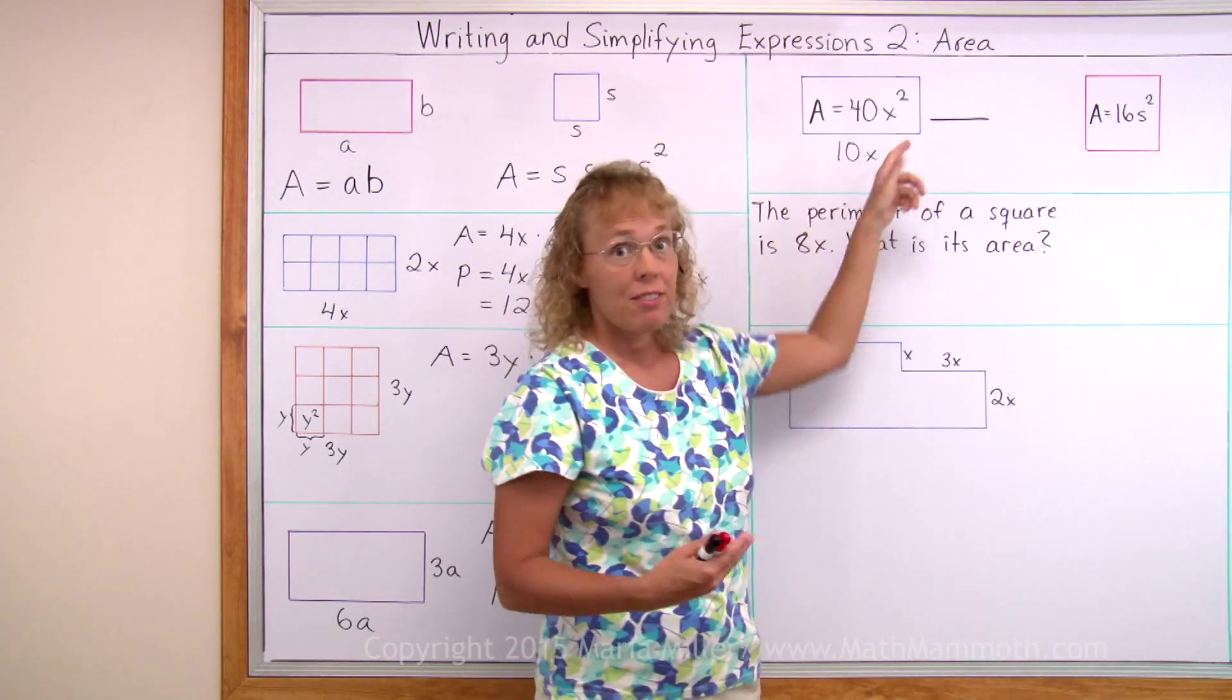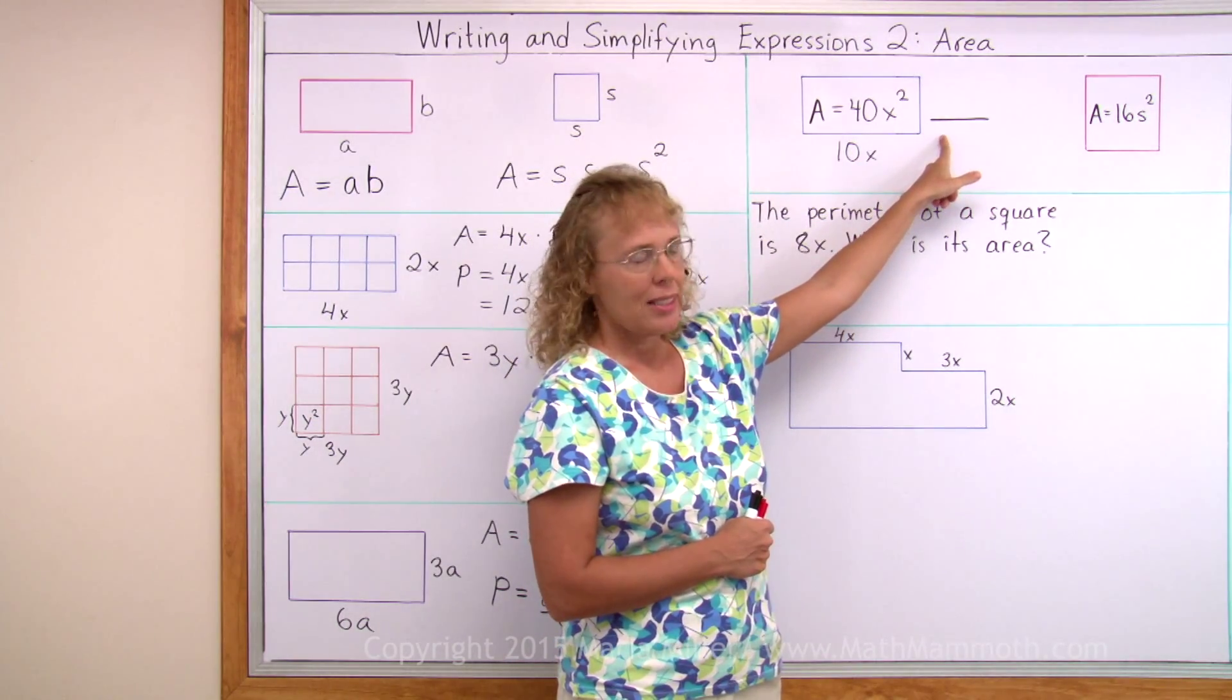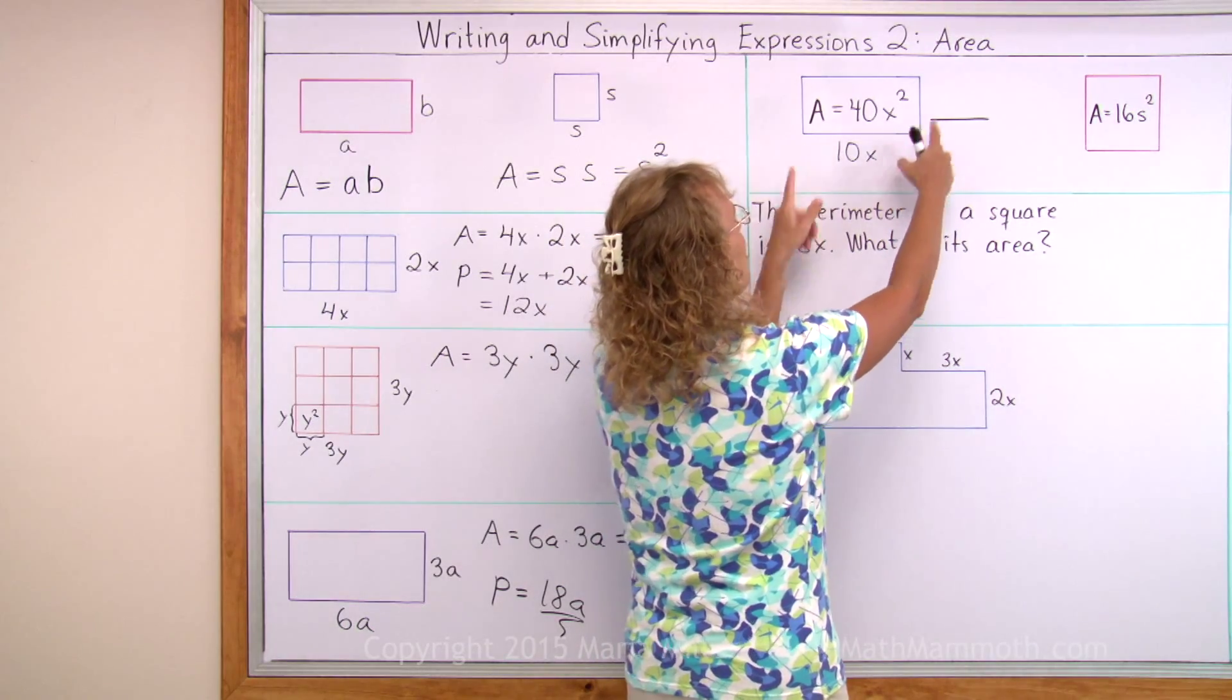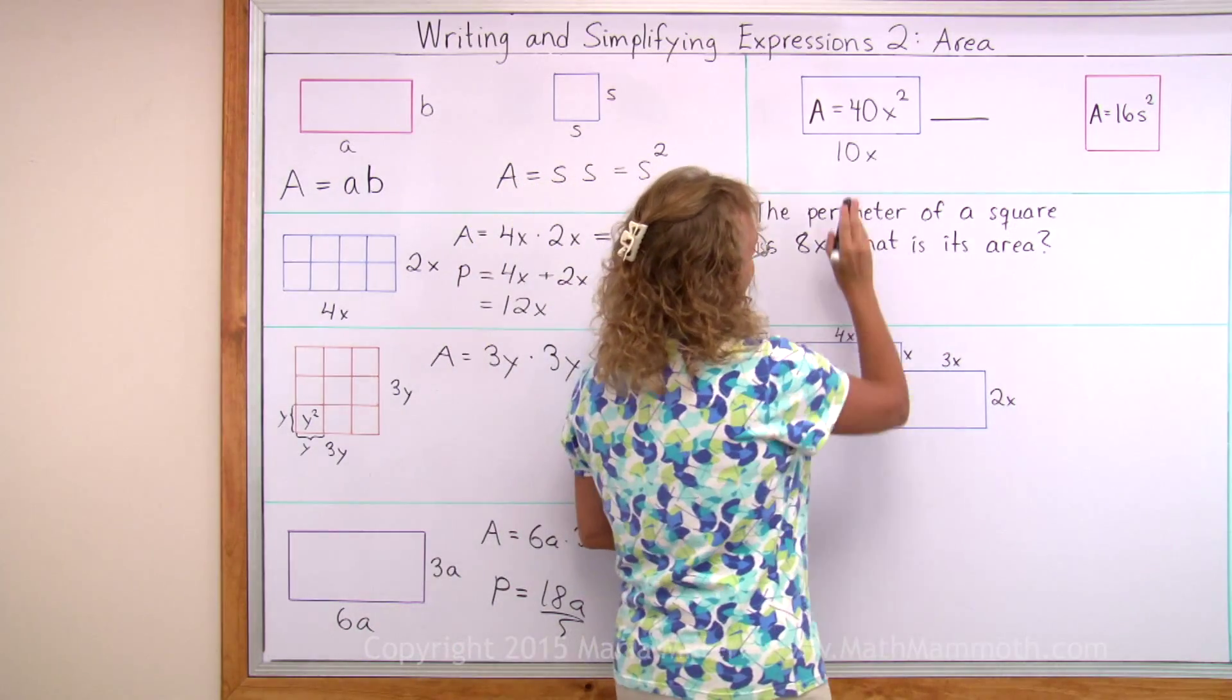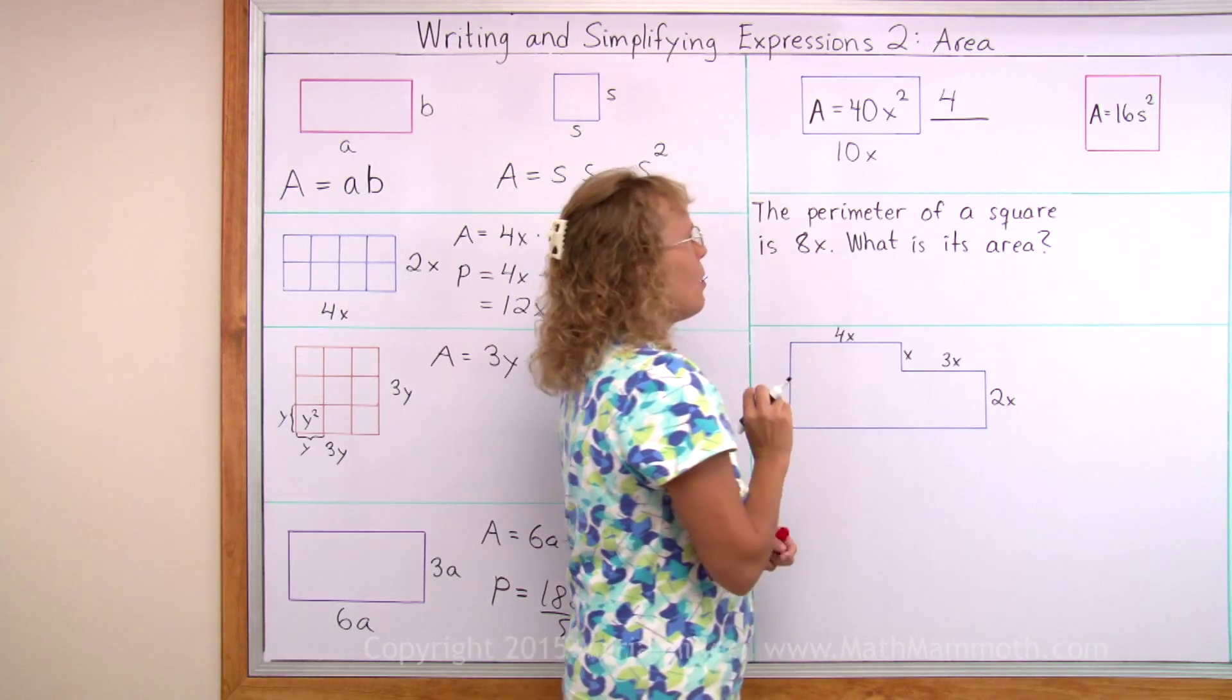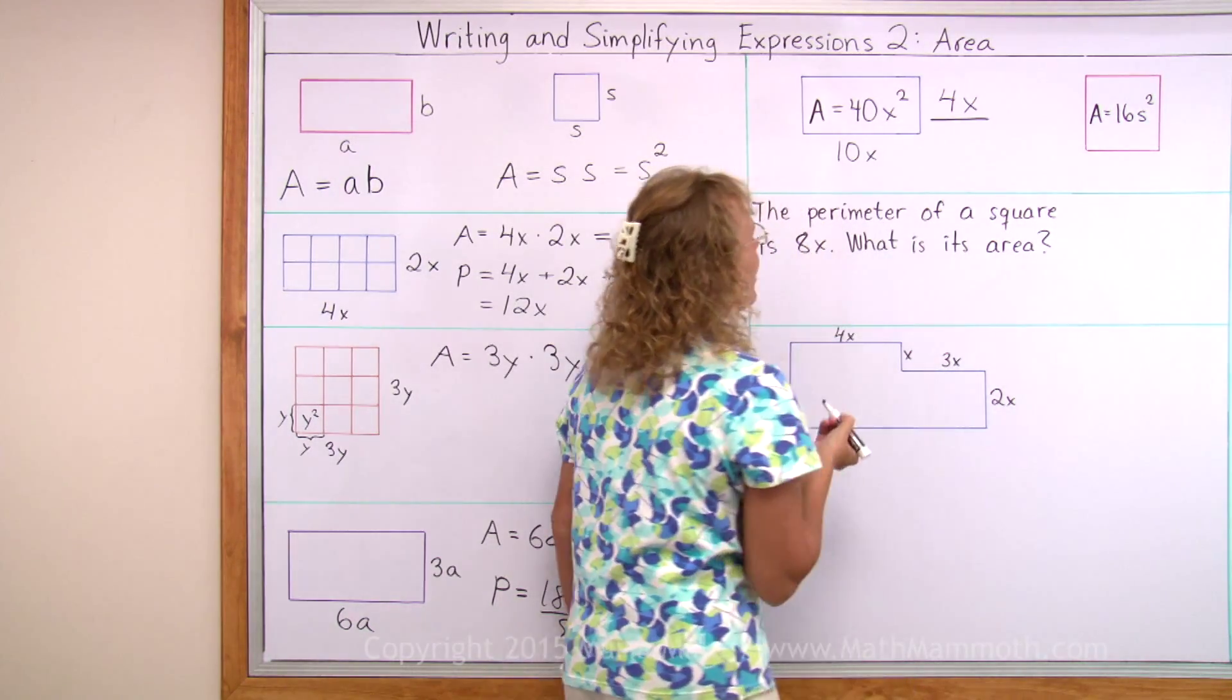Over here, we are given the area of the rectangle. The area is 40x squared. This side length is missing or unknown. This side length is 10x. So now you need to think, 10x times what gives you 40x squared? If we look at the number 10 here and 40 here, it looks like 4 would go here. Because 10 times 4 gives you 40. But that's not quite enough. Because we also need x times x to give us x squared. So 4x is the other side.